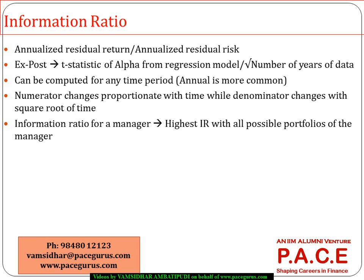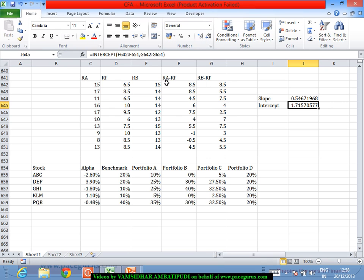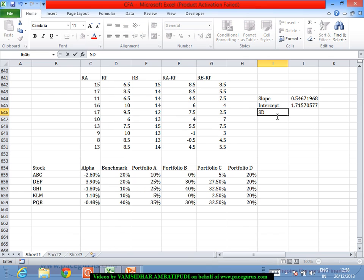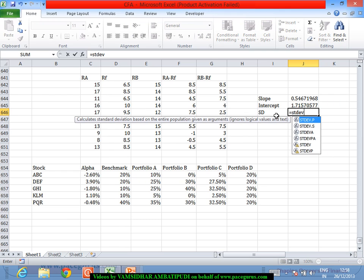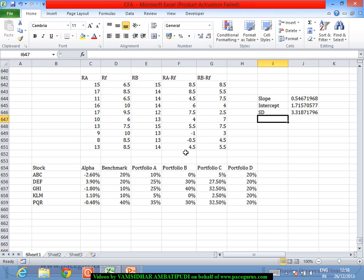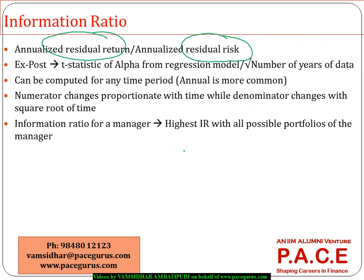Now, once I know the alpha — which is my annualized residual return — I can also find out the change in returns using the fluctuations, and the standard deviation of those fluctuations. If I take the standard deviation of this, that is what is called the residual risk, which comes out to 3.31. So the residual risk is 3.31, the residual return is the alpha, and the ratio of those two is what we consider the information ratio.